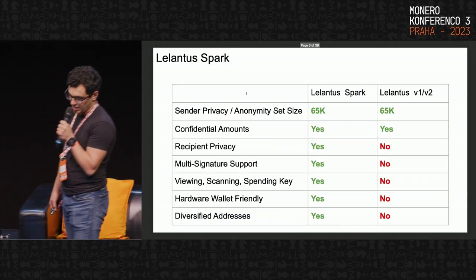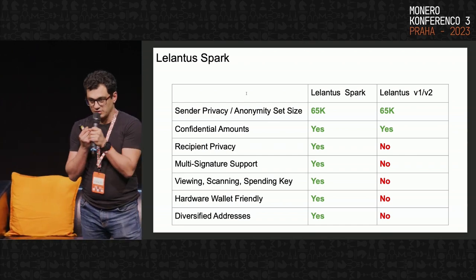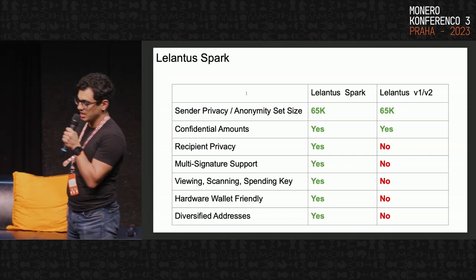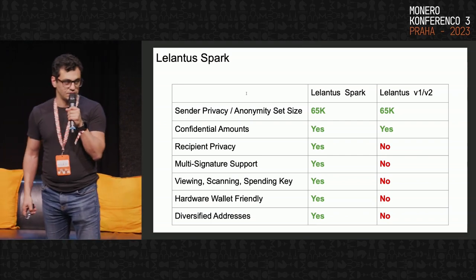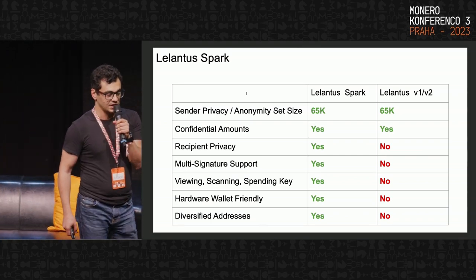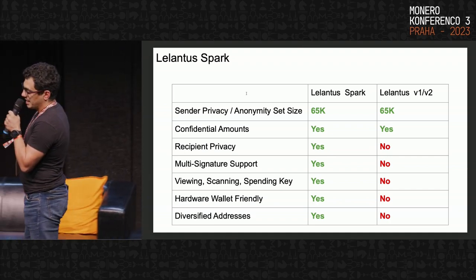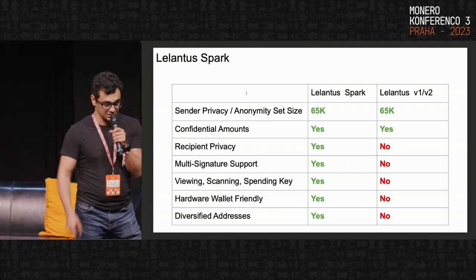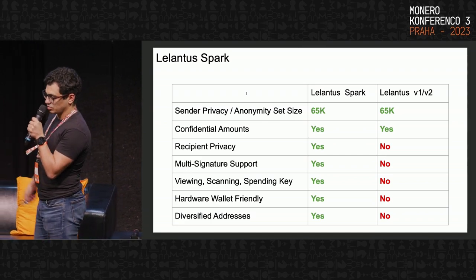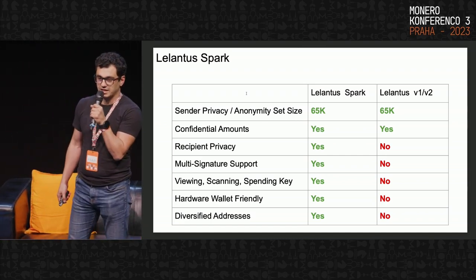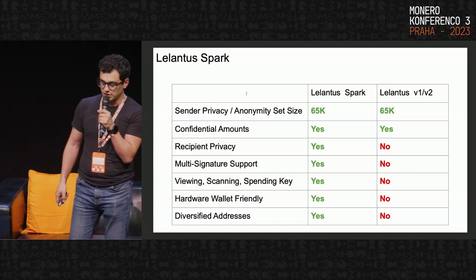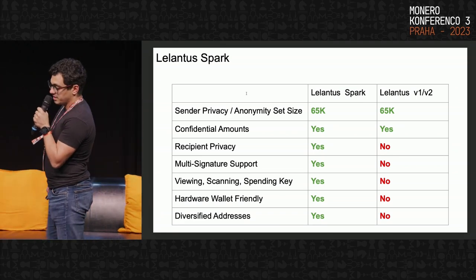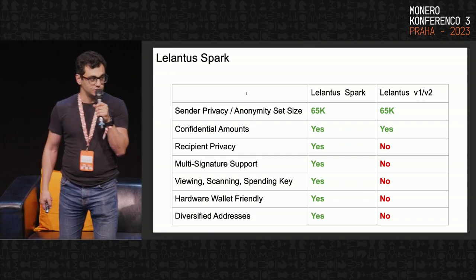Lelantus has been designed in 2019 and since then has been used by a few cryptocurrency projects such as Firo and Beam, and I believe it has inspired the design of other privacy protocols such as Lelantus MimbleWimble, Triptych, and Seraphis. The initial version of Lelantus allowed scaling the anonymity set size to thousands of coins and prevented confidentiality of amounts, but it lacked a very important privacy feature: recipient privacy. Spark fixes this with a very interesting addressing scheme that not only ensures recipient privacy but also makes the protocol more hardware wallet friendly.